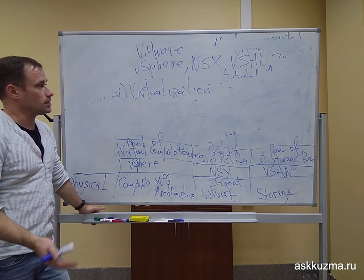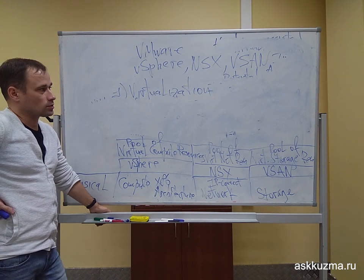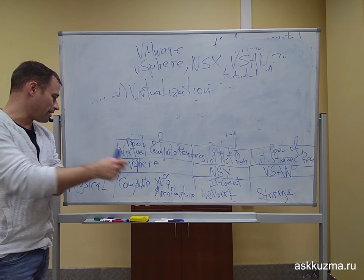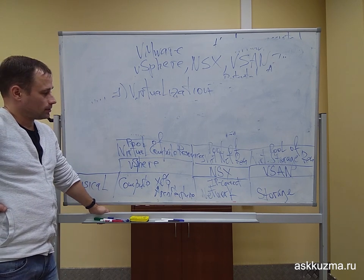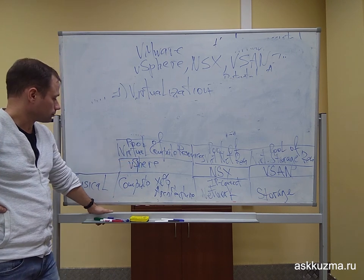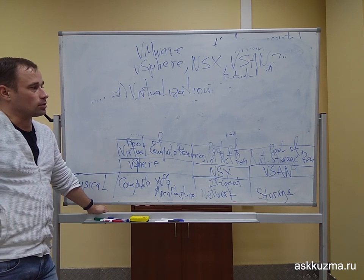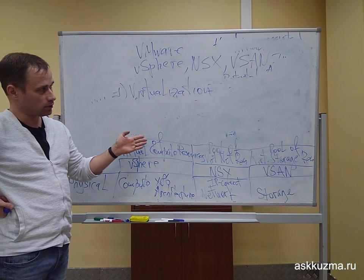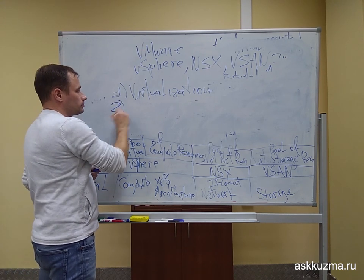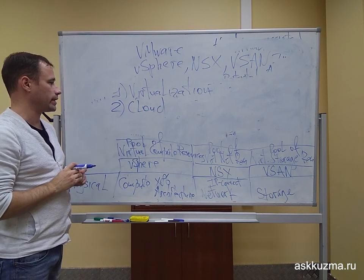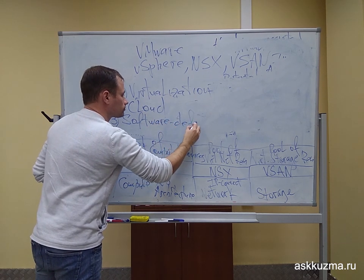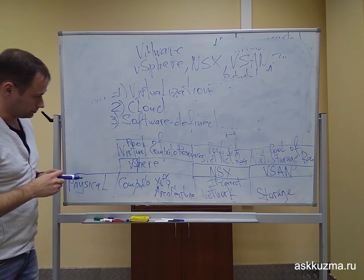The main objective of virtualization is to disintegrate every major data center subsystem and obtain three pools in total: virtualized compute resources, virtualized network resources, and virtualized storage resources. If you treat virtualization as a technology to achieve this objective, that will help you understand the concept of the cloud, as well as the concept of software-defined anything — or everything.